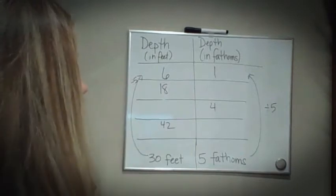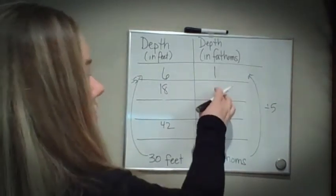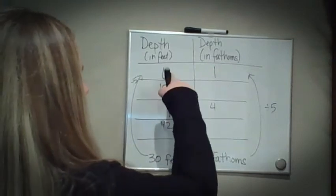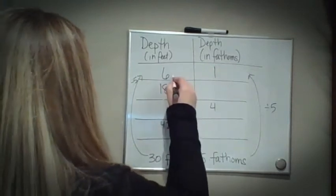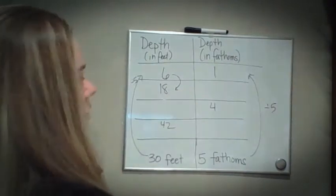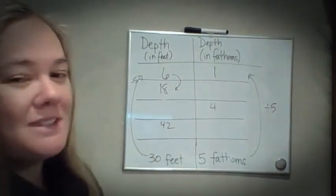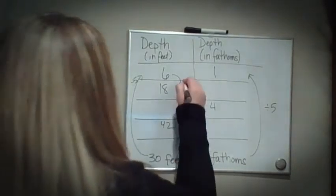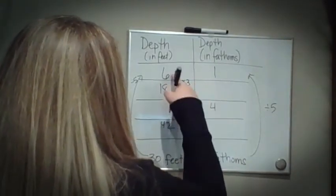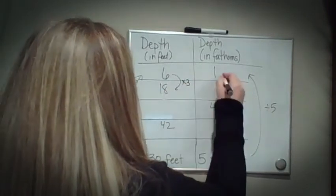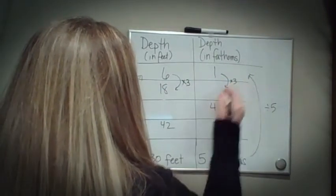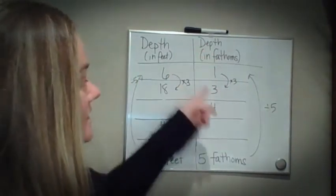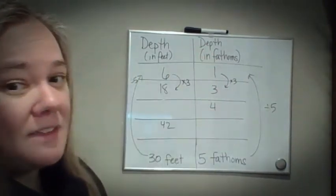Now that I know that, I can't just put two fathoms here. I have to look at what's next, which is six feet, and I'm going to go from six to 18. Six times three is 18. So if I multiply this by three, I'm also going to multiply this by three, which would become three. So 18 feet deep is also stated as being three fathoms deep.